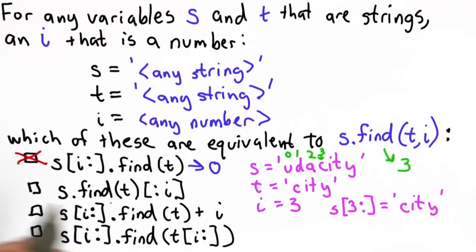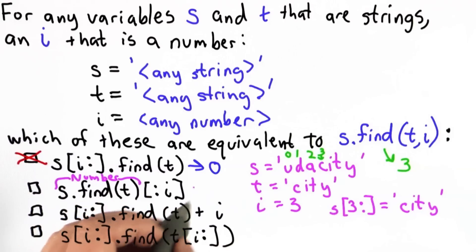The second one doesn't actually make any sense. So here s.find evaluates to a number, and then we're trying to index from a number. That doesn't make any sense. We can only index from a string, select a sub-sequence of characters. There's no way to select a sub-sequence of characters from a number. So this is invalid, definitely doesn't produce the same output as s.find(t, i).